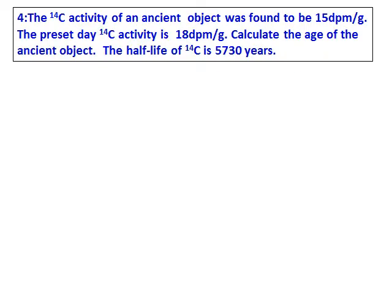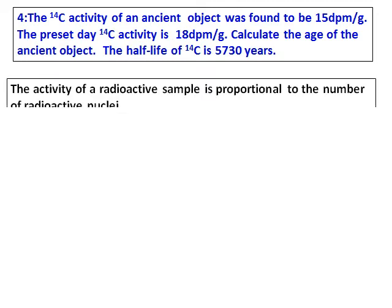The carbon-14 activity of an ancient object was found to be 15 disintegration per minute per gram, and the present-day activity is 18 dpm per gram. Calculate the age of the ancient object. The half-life of carbon-14 is 5730 years.